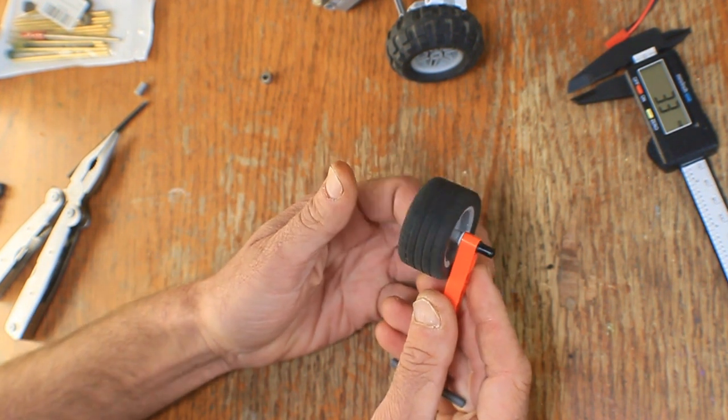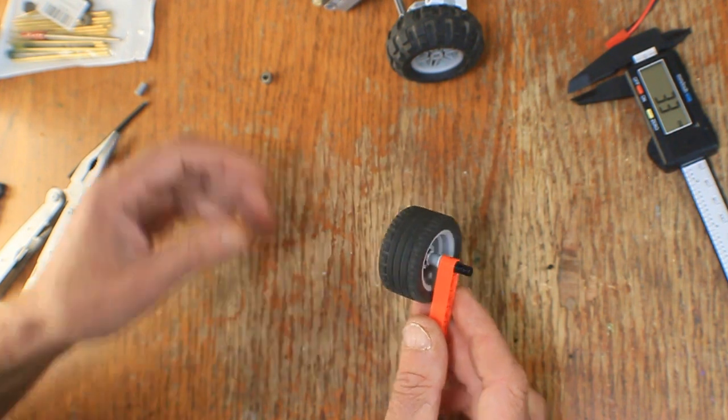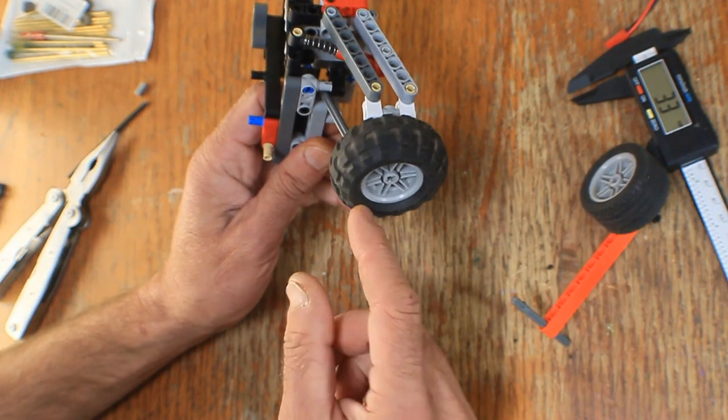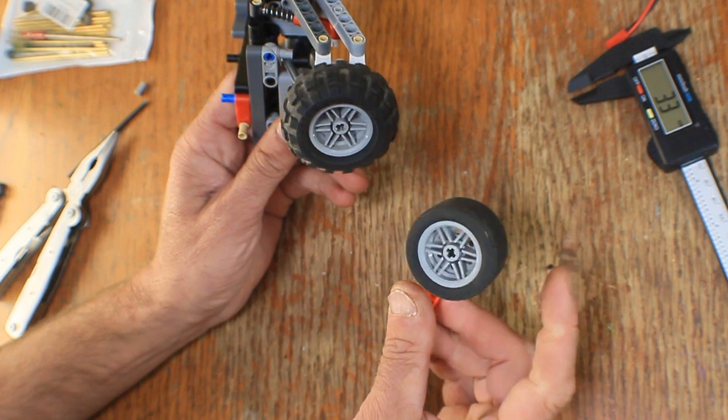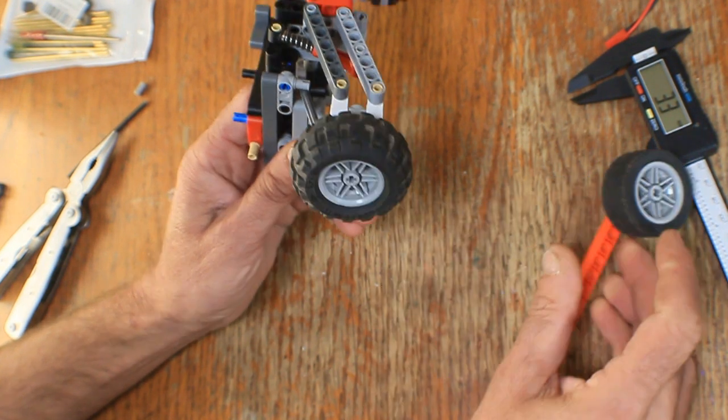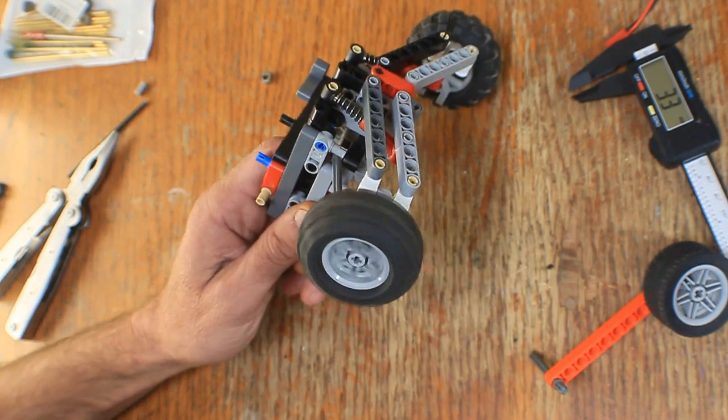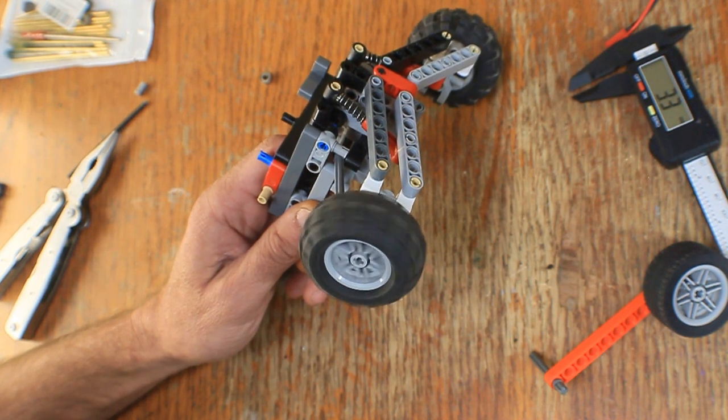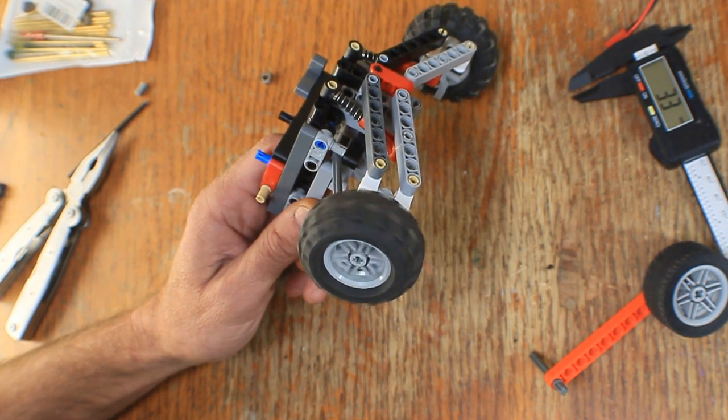And now you've got a wheel on a bearing. These bearings I got from Amazon are kind of garbage, but here's a decent bearing, and you can see that the thing will spin quite a bit better than if it was on a Technic beam.